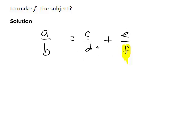Which means we would basically want to cancel c divided by d from this side of the equation. We could do that by subtracting c divided by d from both sides of the equation, so that we would get a divided by b minus c divided by d equals e divided by f.